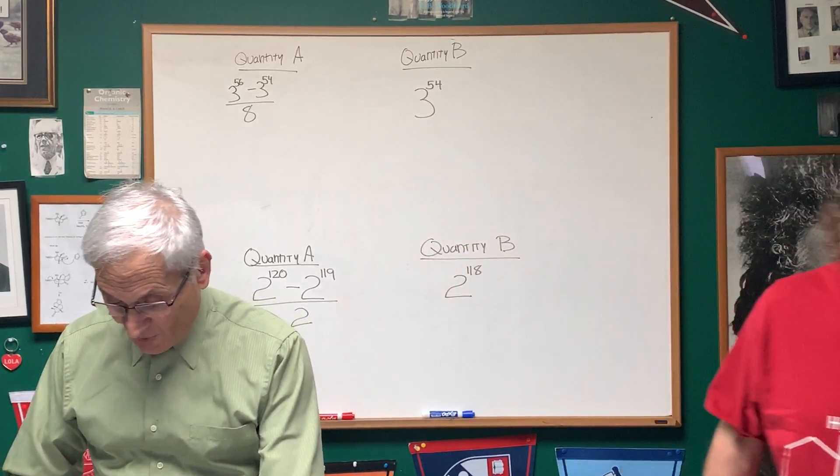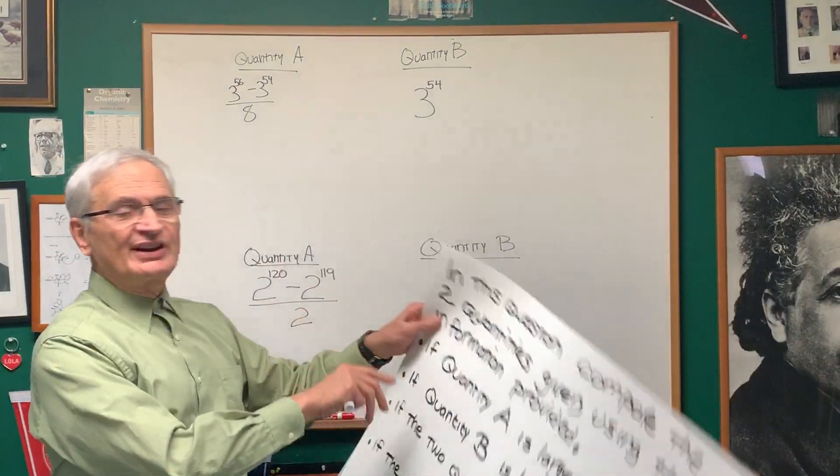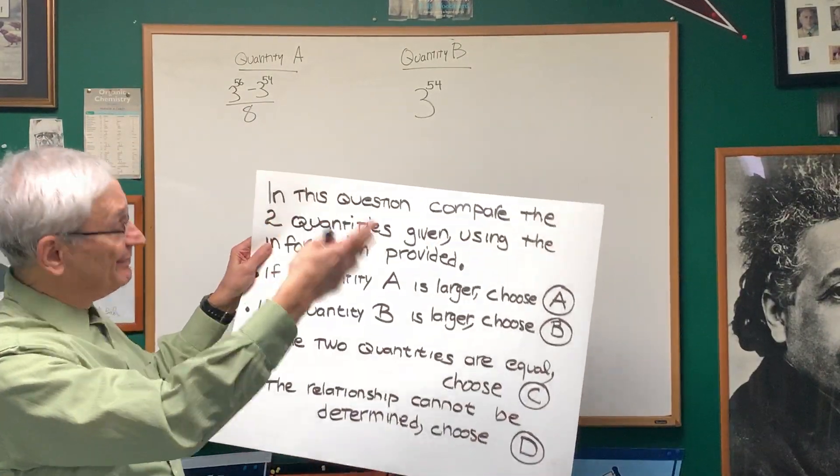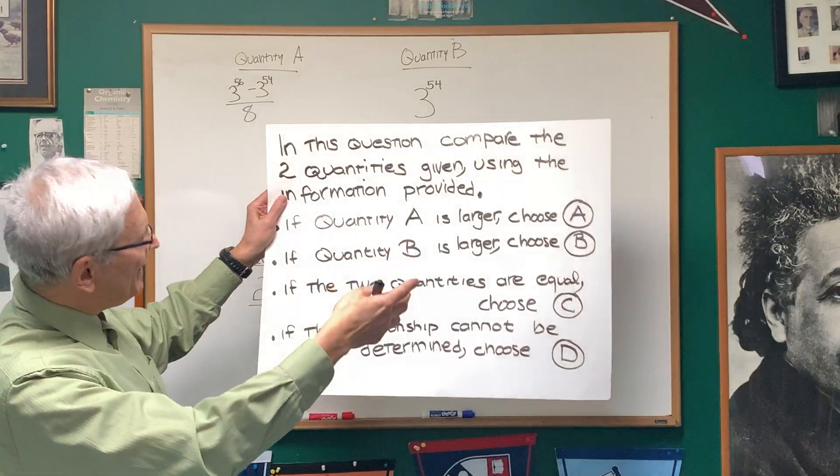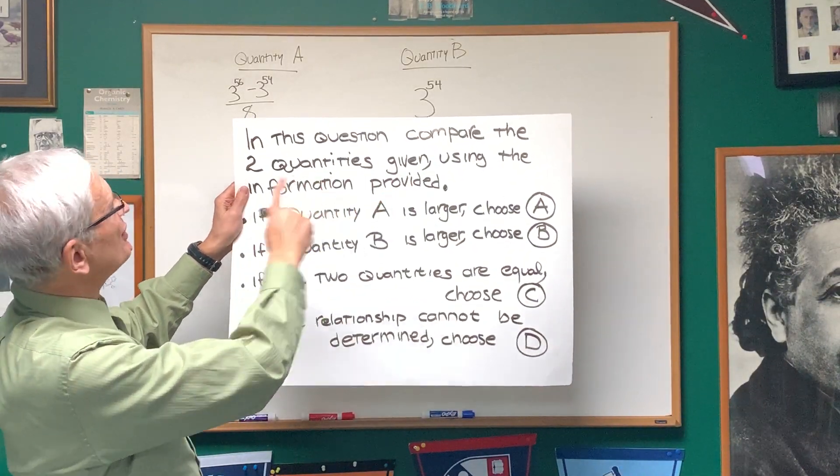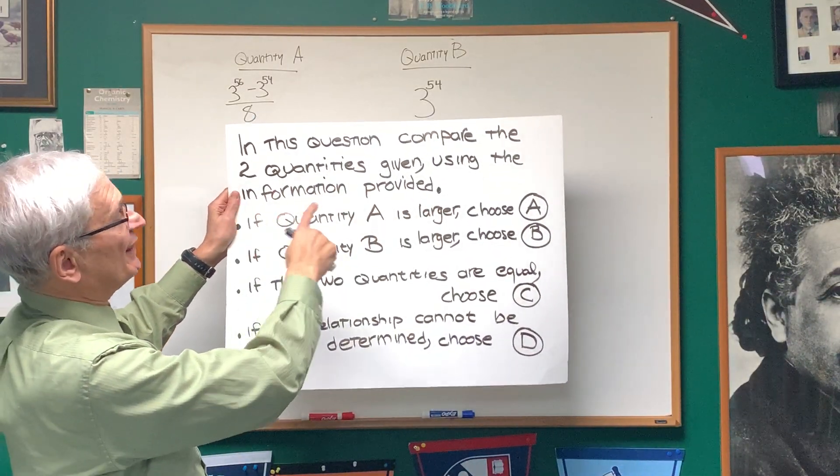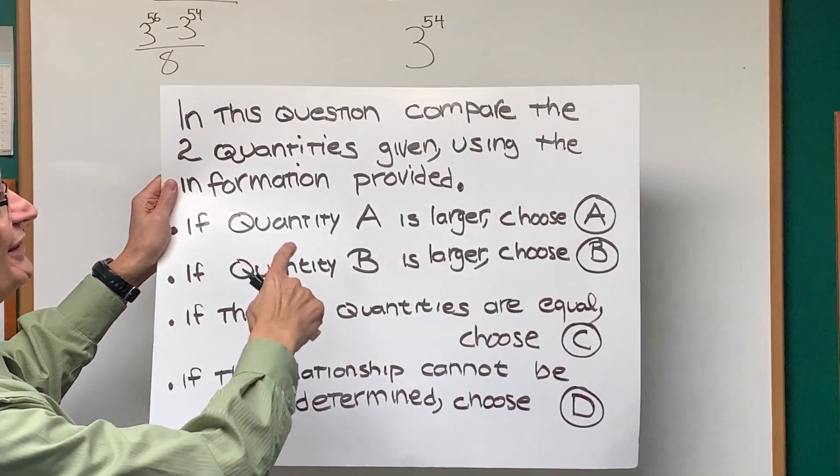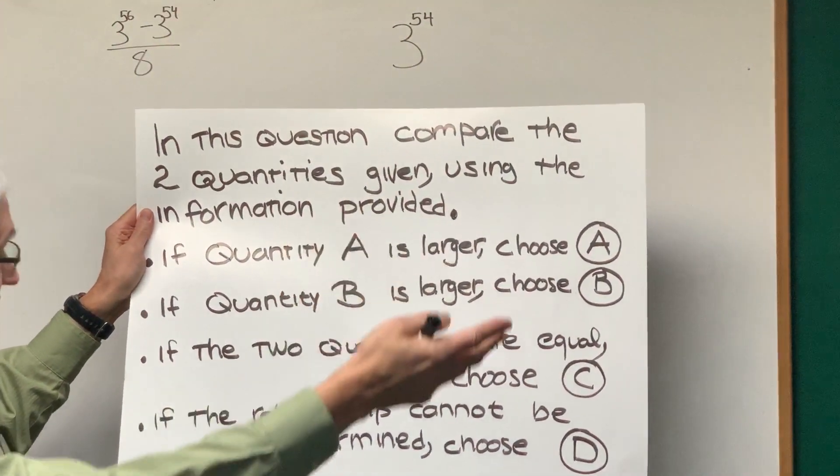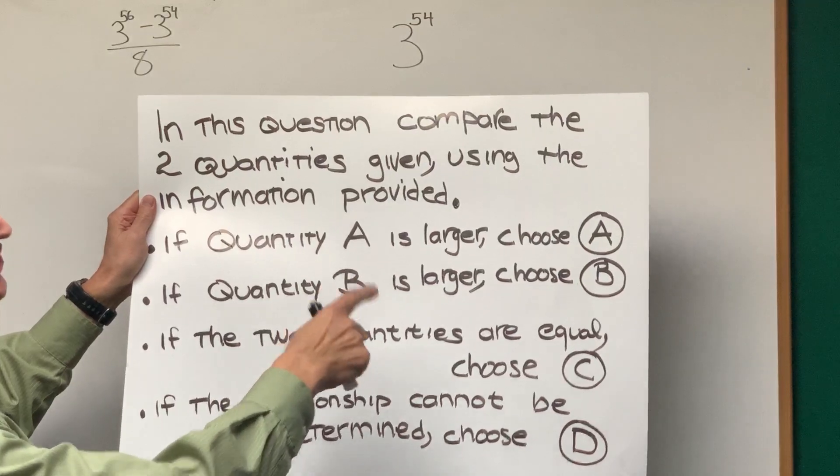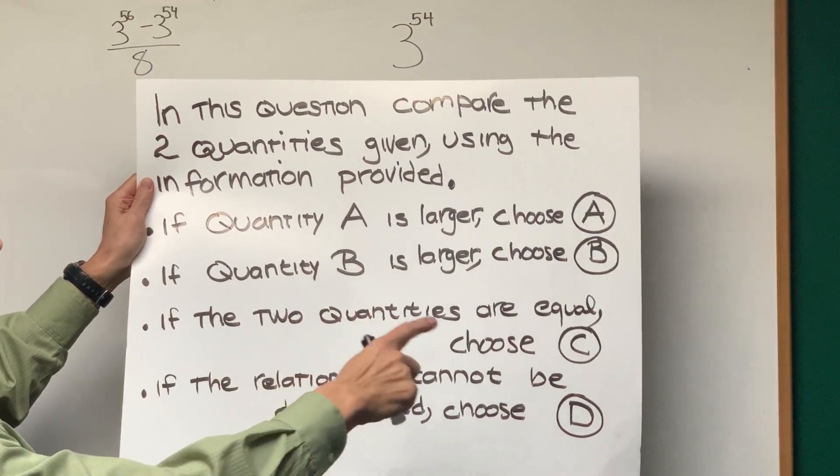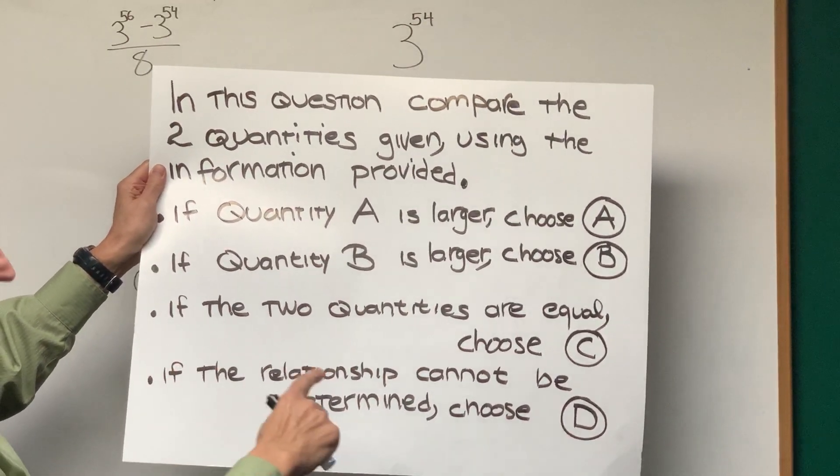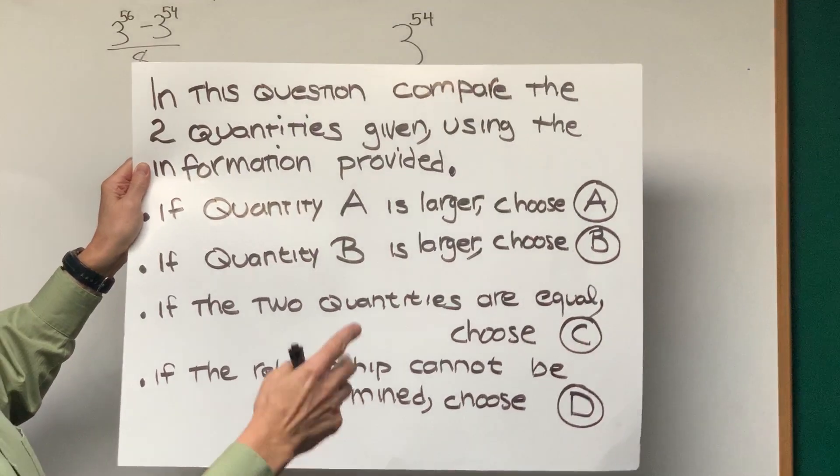All right, Professor, go do it. Okay, we're going to do another problem of the comparison of quantities A and B. Just to review the preamble to the problem, in this question, compare the two quantities given using the information provided. If quantity A is larger, choose A. If quantity B is larger, choose B. If the two quantities are equal, choose C. If the relationship cannot be determined, choose D.